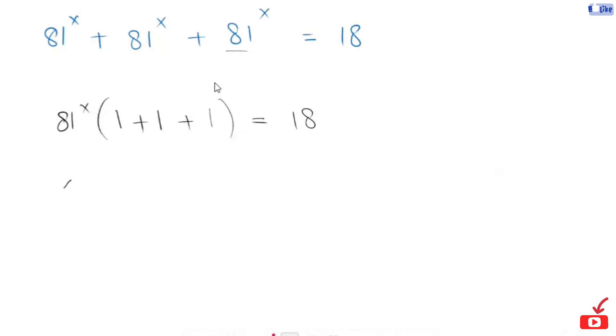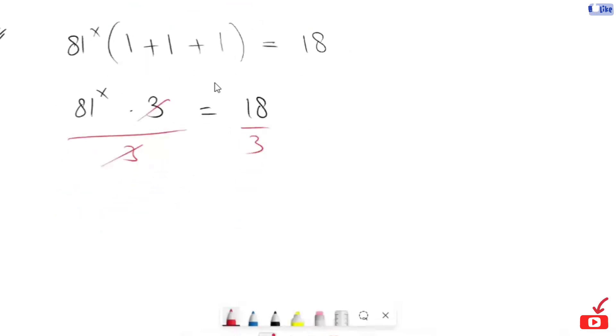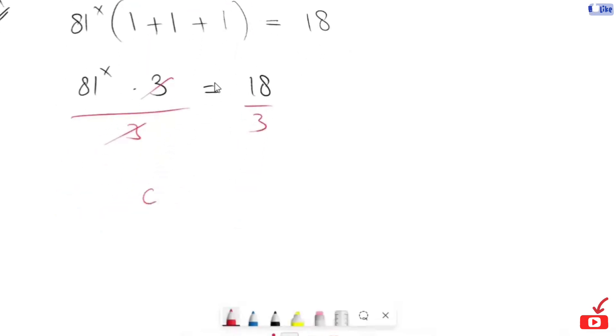Now, I'm going to simplify further. 81 raised power x times 3 is equals to 18. Now, this 3 is going to be divided by this side. This and this get cancelled, so we're left with 81 raised power x equals 6.